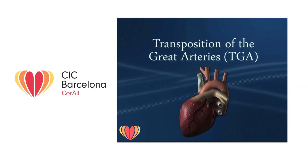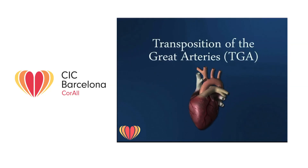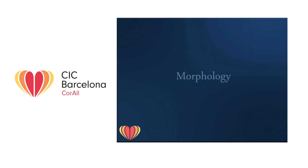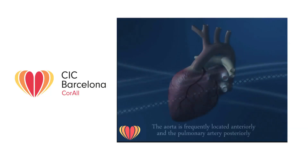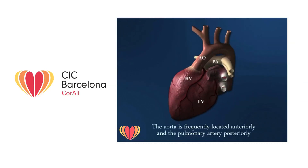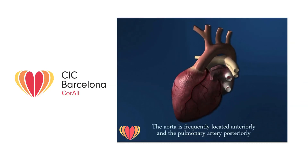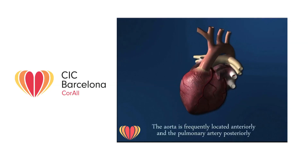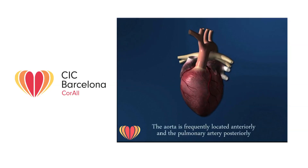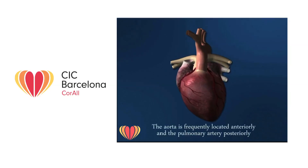Transposition of the great arteries is one of the most common congenital heart diseases, accounting for about 4.7% of all cases. It refers to an abnormal ventricular arterial connection: the aorta takes its origin from the morphologically right ventricle and the pulmonary artery from the morphological left ventricle. In TGA, the aorta is frequently located anteriorly and the pulmonary artery posteriorly.